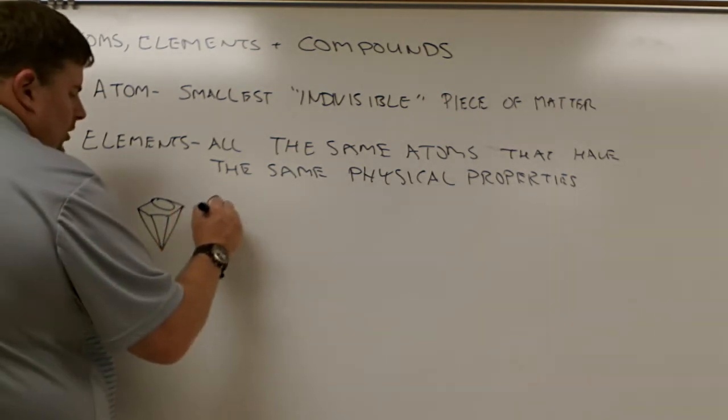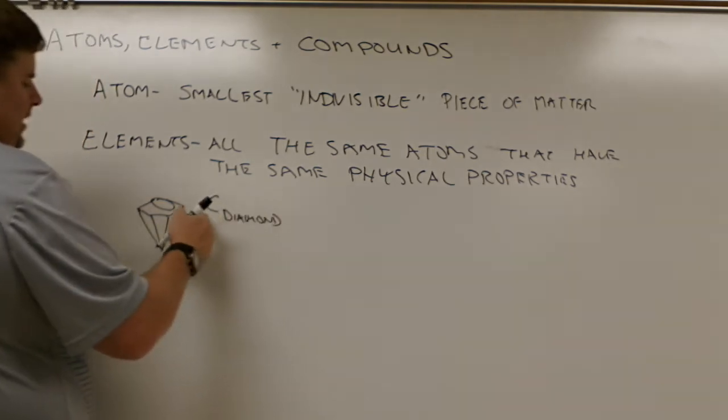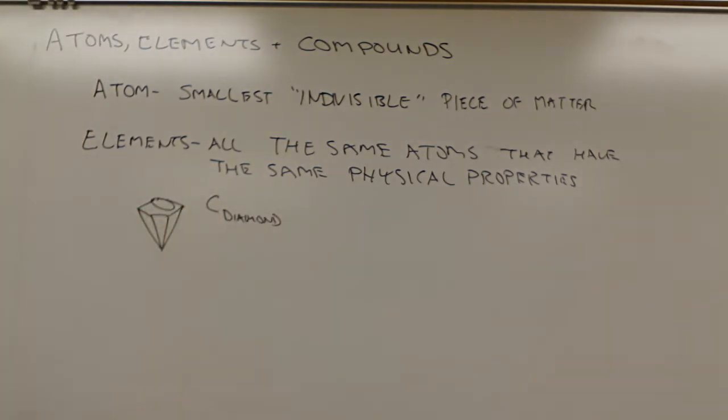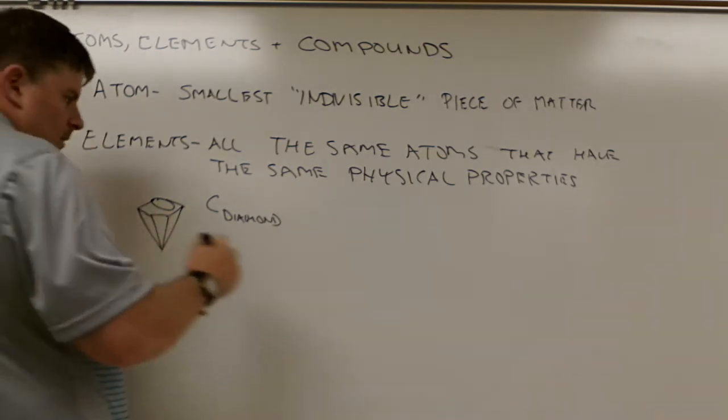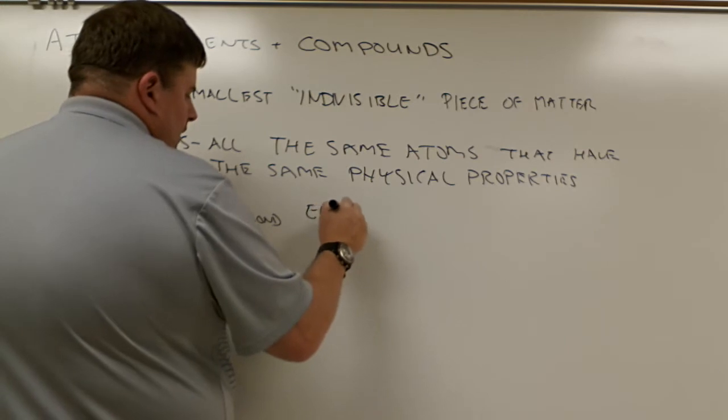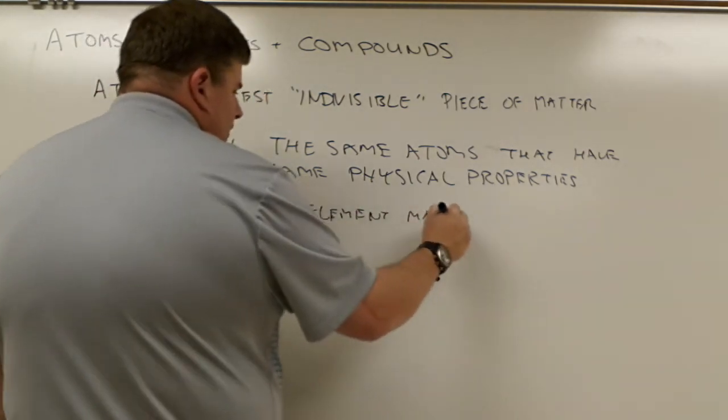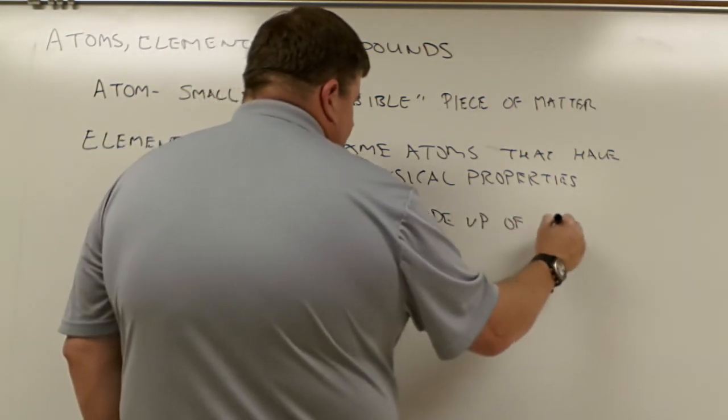The carbon diamond form here means that all of this is made up of nothing but carbon. All C's. So diamond carbon is an element made up of carbon atoms.